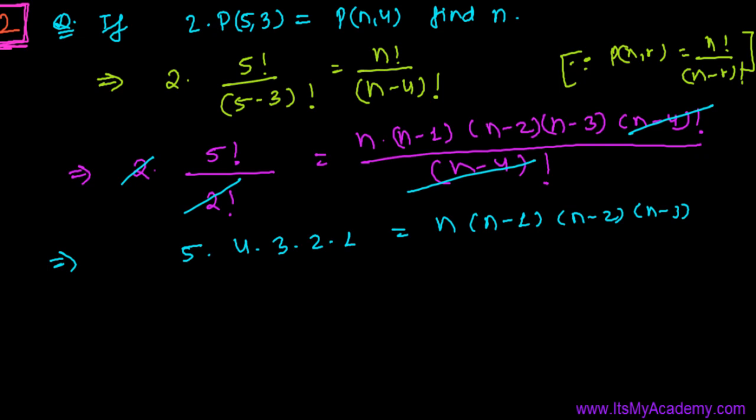It's really complex to solve this, but if you compare in a proper way then it's very easy. Let me show you here. It's 5 times 5 minus 1 times 5 minus 2 times 5 minus 3 times 5 minus 4. But 5 minus 4 is 1, so we can neglect this. It's not required to write.